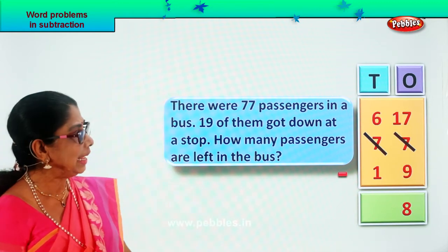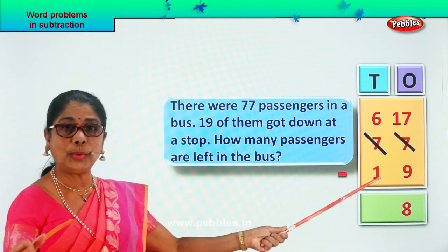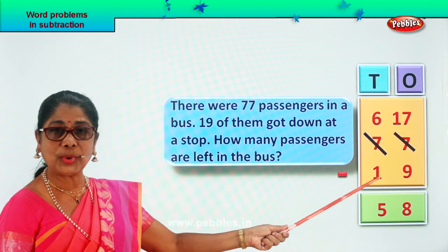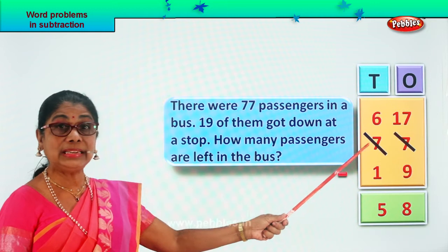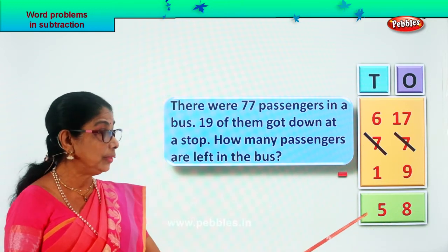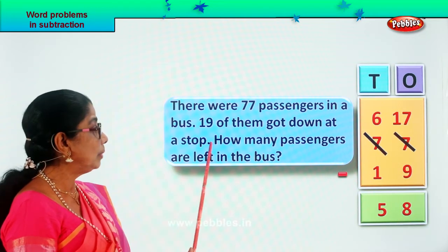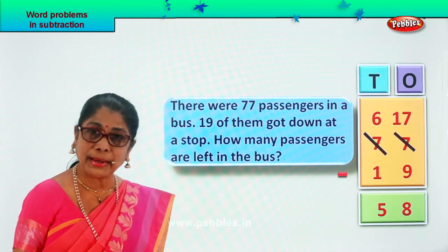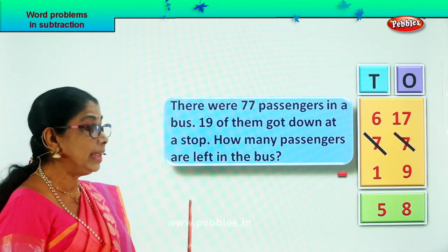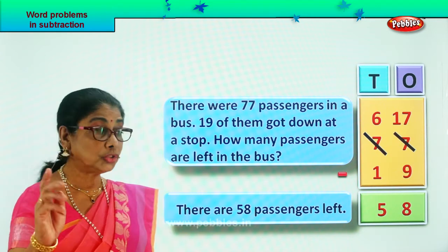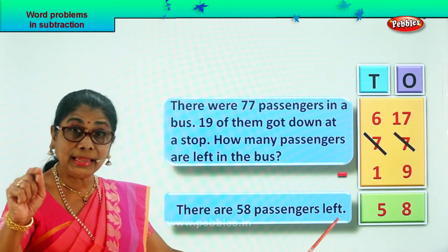Now what do we do? Go to the tens place. In the tens place, we have 6 minus 1. 6 take away 1 is 5. So we write 5 tens down here. 77 take away 19 gives you the answer 58 — 5 tens, 8 ones. How many passengers are left in the bus? There are 58 passengers left in the bus. Your answer is there are 58 passengers left in the bus.